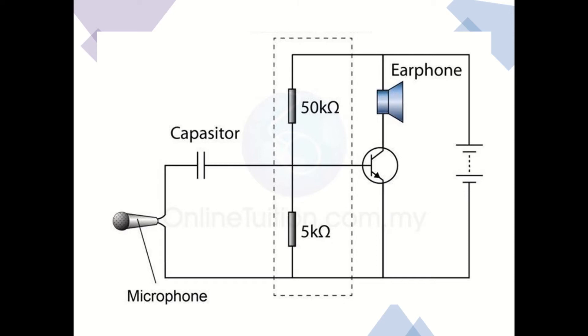When we talk towards a microphone, the microphone will change the sound energy to electrical energy. If there is electrical energy, automatically there is a current flow which is alternating current. The capacitor is placed at the base current to block a direct current but allows an alternating current to flow.